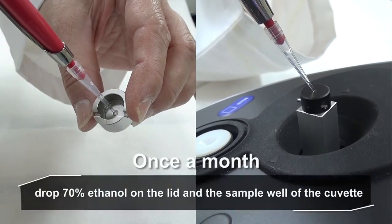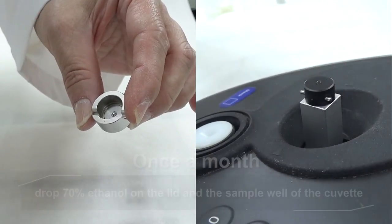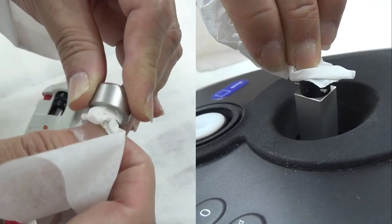21. Once a month, drop 70% ethanol on the lid and the sample well of the cuvette and wipe clean with a Kim wipes tissue.